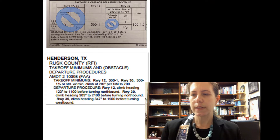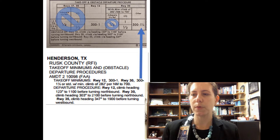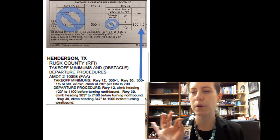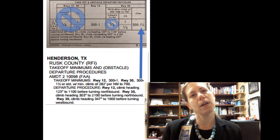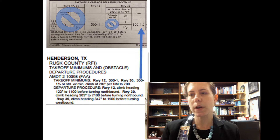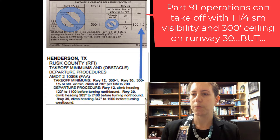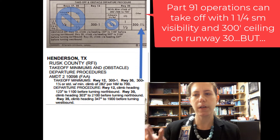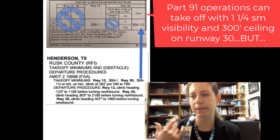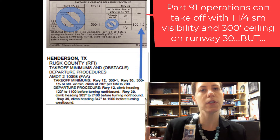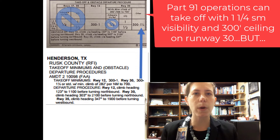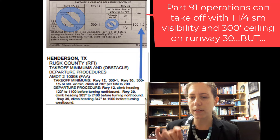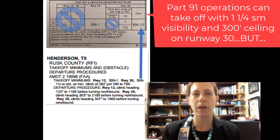Where it gets a little more complicated is when there are certain climb gradient requirements. Let's take a look at runway 30, which does have this minimum climb gradient section. But first, let's look at the box over here that says 'other' — it says we can take off with a 300-foot ceiling and one and a quarter mile visibility from runway 30. That's fine. I cannot take off on runway 30 or runway 12 with zero-zero weather under Part 91 because we have takeoff minimums as marked right here.